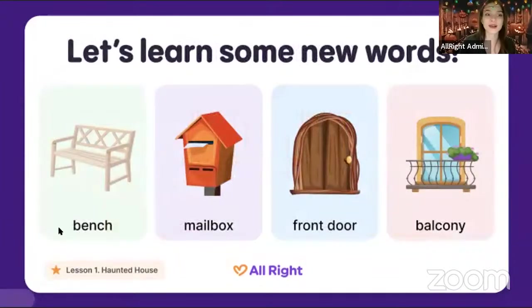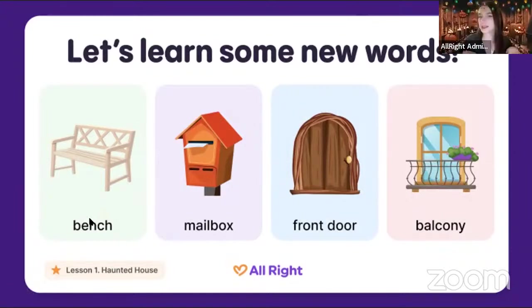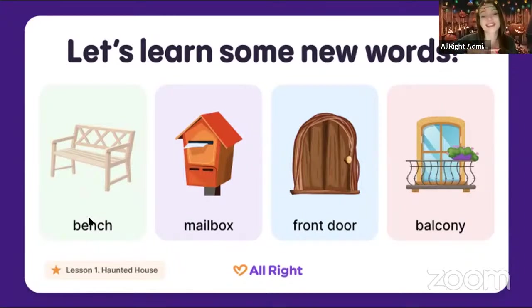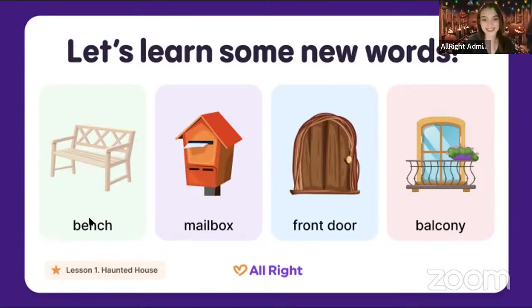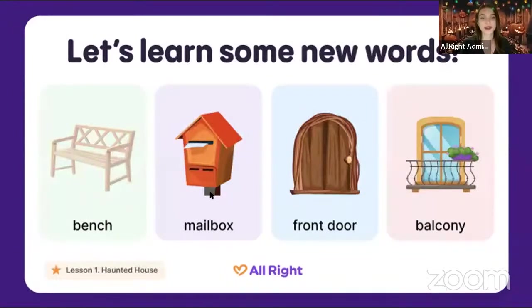Now four more words. The first one — let's say together: it's a 'bench.' You can sit on the chair, on the sofa, and on the bench. Do you have a bench inside your house or outside? You can see benches outside in the garden or on the street.